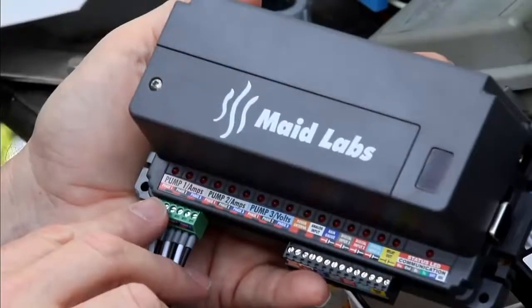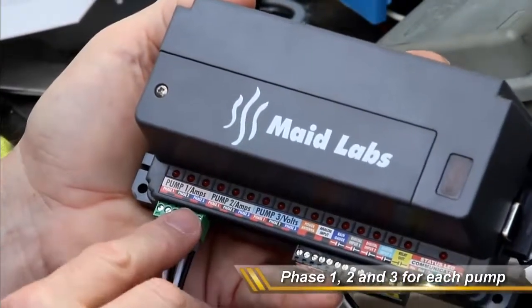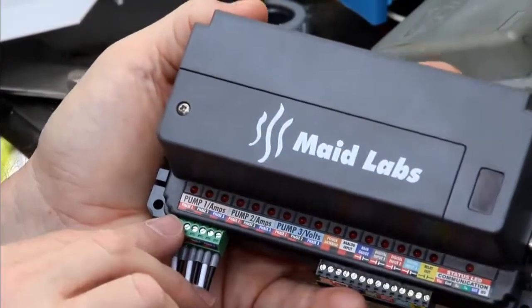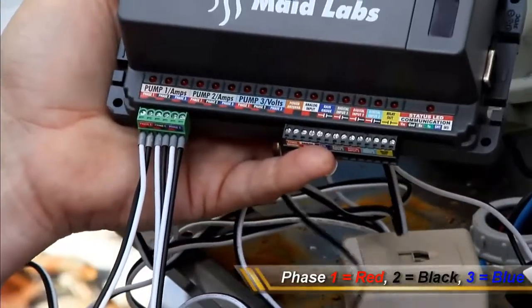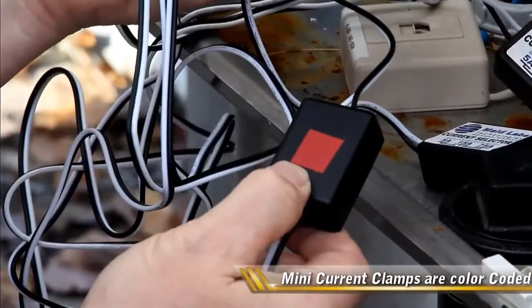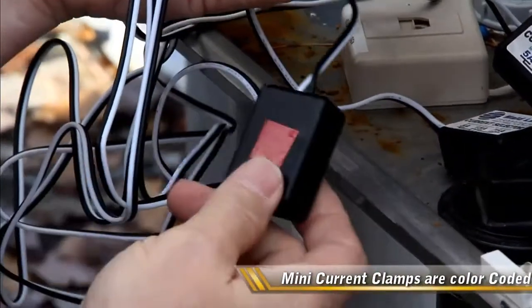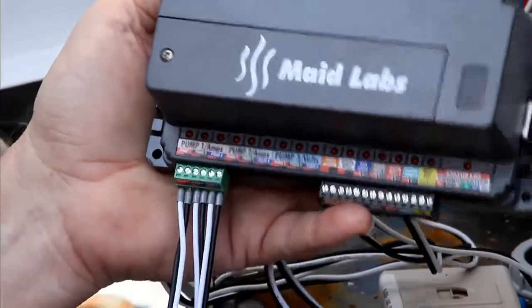On each pump there's phase one, phase two, and phase three. We color code them by red, black, and blue. If you notice, each one of our current clamps has a color code on it that we utilize.